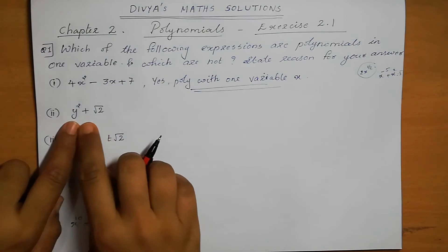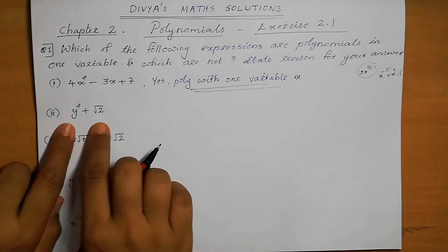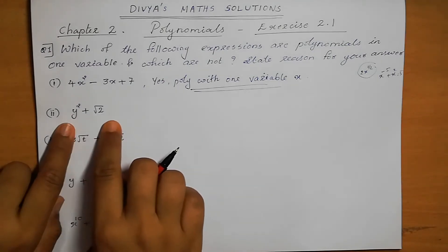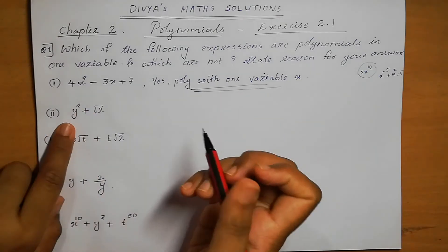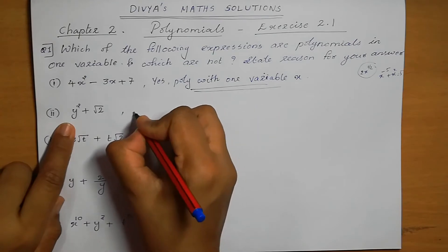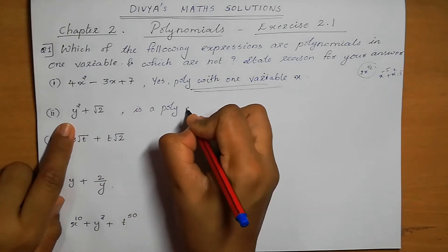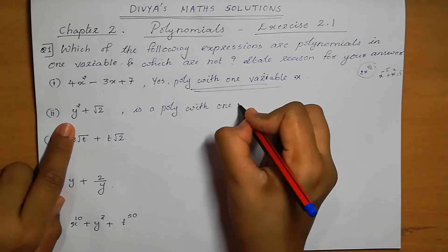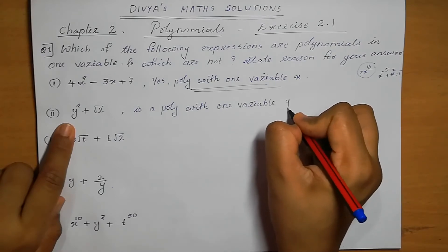Question number 2: y squared plus root 2. The variable here is y, and there is only one variable. The power of y is 2, which is a whole number. So this is also a polynomial in one variable, y.